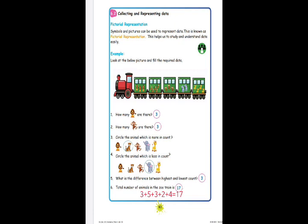Third question: circle the animal which is more in count. There are three lions, five tigers, three monkeys, two elephants, and four giraffes. Tigers are more, so circle tiger — tiger is the answer. Fourth question: circle the animal which is less in count. There are only two elephants, so the answer is elephant.